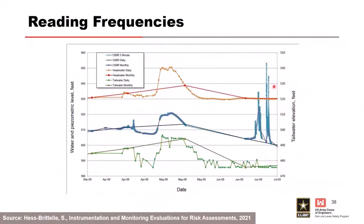Reading frequencies are important — pick the appropriate frequency. A plot shows that automated nearly-daily readings capture a seepage spike from a heavy precipitation event, whereas someone going out every two months would miss it entirely. Also, automation can be used temporarily: before drilling or test pitting, drop in a temporary transducer to monitor for subsurface changes during those activities, or during a construction repair.